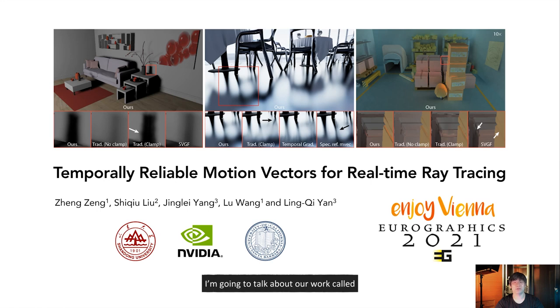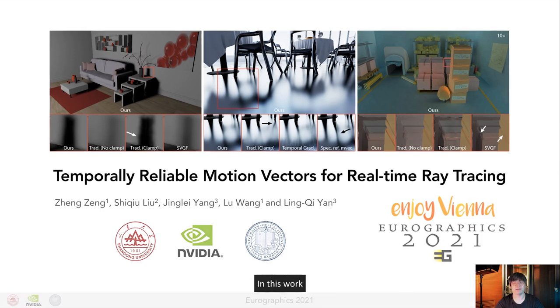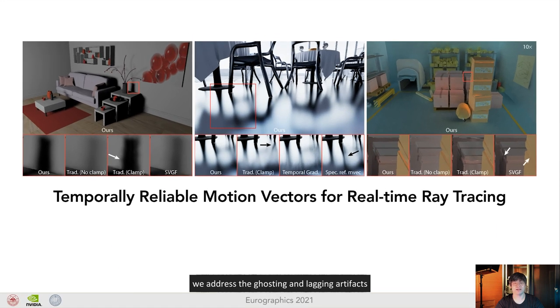Hello everyone, I'm going to talk about our work called temporarily reliable motion vectors for real-time ray tracing. In this work, we address the ghosting and lagging artifacts in real-time ray tracing due to motion vectors. To explain where these artifacts come from, I'll first give a little background.